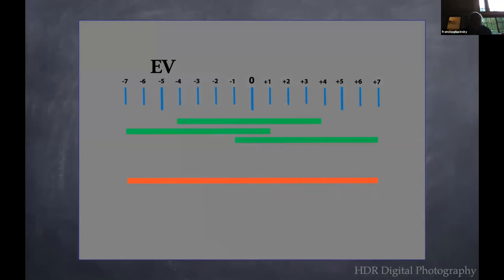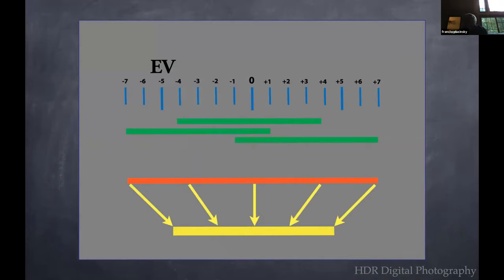What we've essentially done is taken three exposures, combined them, and the computer program combined them into one item, then compressed it down to a file you can see on your computer.